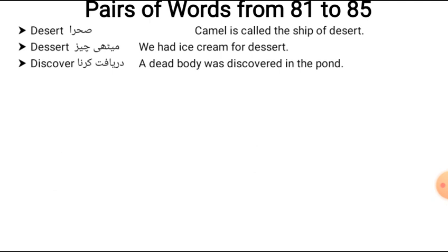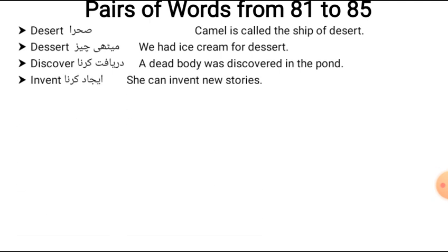Next pair: 'discover' and 'invent.' Discover means to find something — 'A dead body was discovered in the pond.' Invent means to create something new — 'She can invent new stories.'